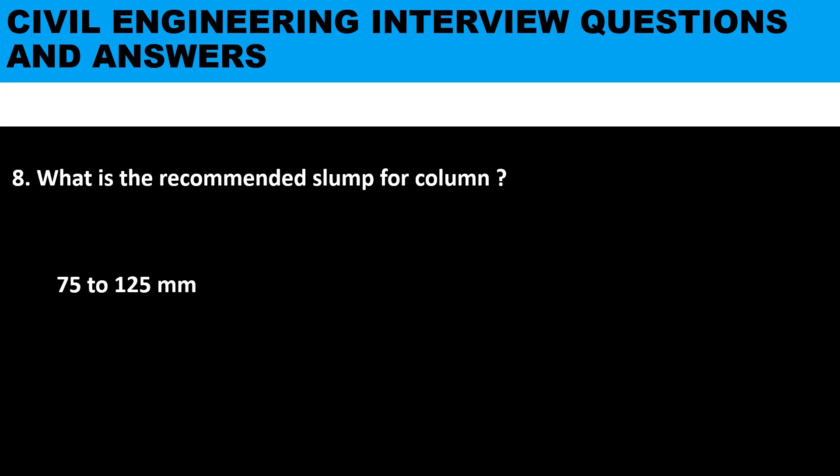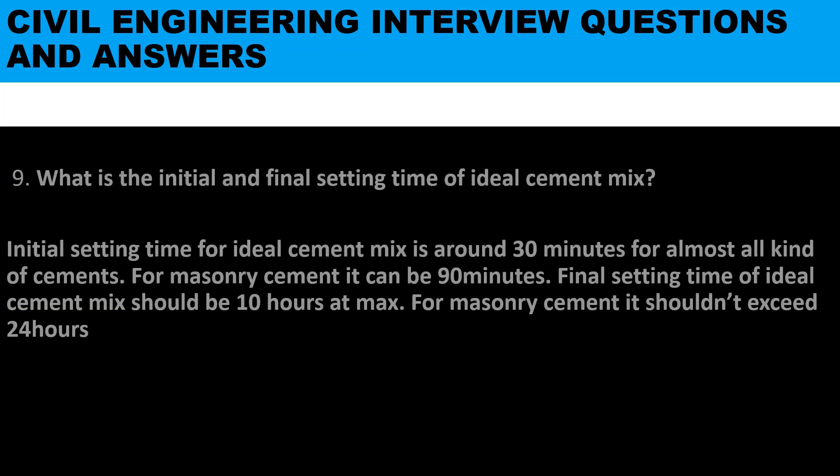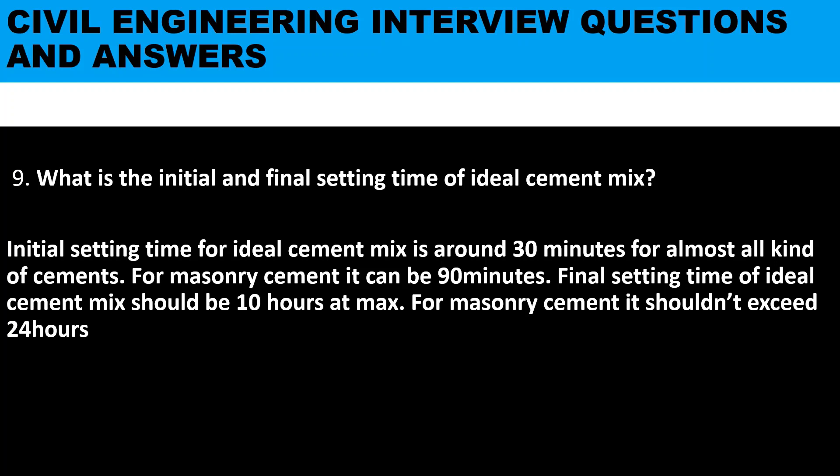Number eight: what is the recommended slump for a column? The recommended slump for a column is 75 to 125 millimeters. Question nine: what is the initial and final setting time of ideal cement? The initial setting time for an ideal cement mix is around 30 minutes for almost all kinds of cement; for masonry cement it can be 90 minutes. The final setting time for an ideal cement mix should be 10 hours at maximum; for masonry cement it shouldn't exceed 24 hours.